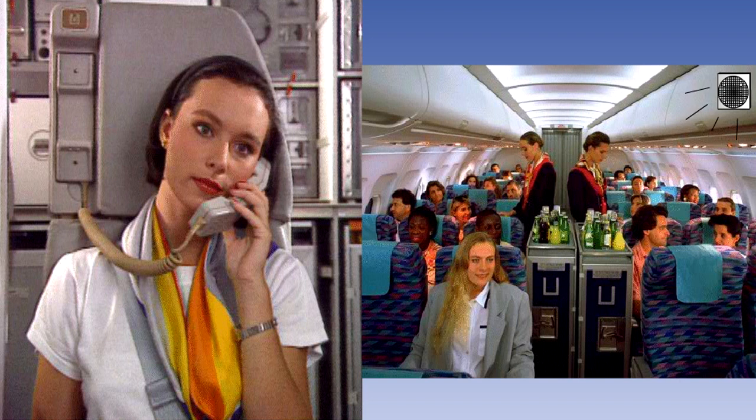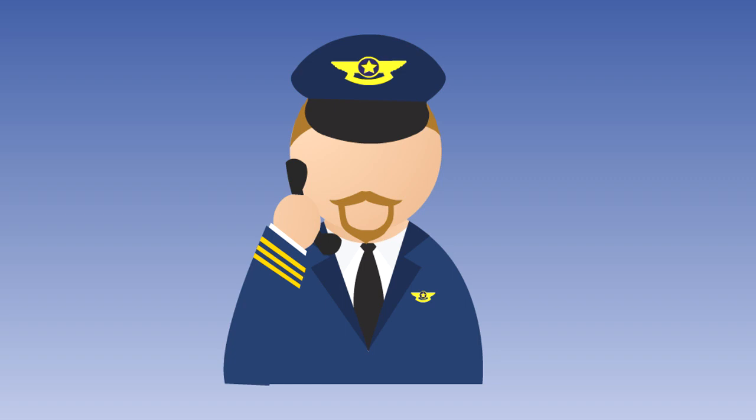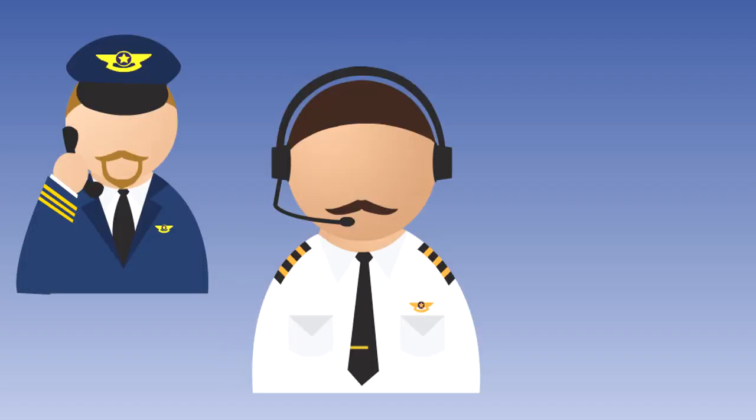All aeroplanes with a maximum approved seating capacity of more than 19 must have a public address system installed. The system must be readily accessible for immediate use from the flight deck. This is achieved by either having a handheld microphone that all flight crew members can access, or by having the system operable through the crew headset microphones.